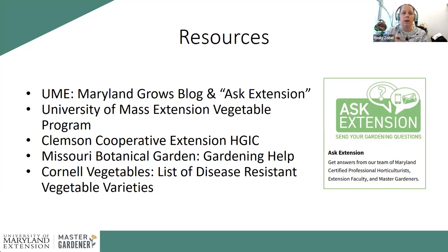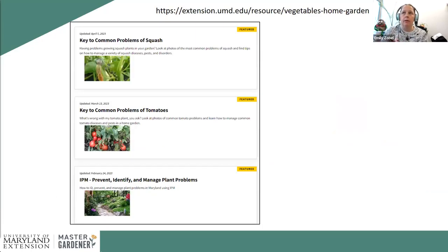If you live outside Maryland and need general home and garden information, our website is open to all. Other good resources include University of Massachusetts for the northeast, Clemson for the midwest, Missouri Botanical Gardens, and Cornell, which maintains a list of disease-resistant varieties useful for both gardeners and farmers. To find our site, search 'HGIC UME' and you can look up specific crops like squash or tomatoes.